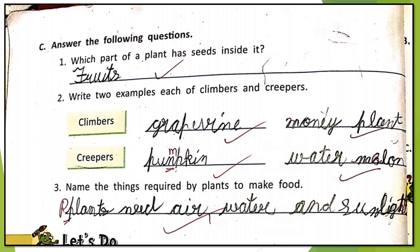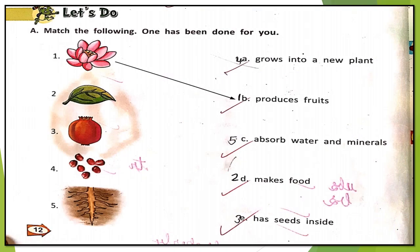Number three: name the things required by plants to make food. Plants need air, water, and sunlight. Now match the following: flower — produces fruits; leaf — makes food; fruit — contains seeds; seeds — grows into a new plant; roots — absorb water and minerals.